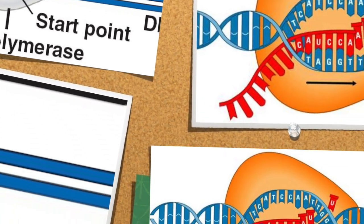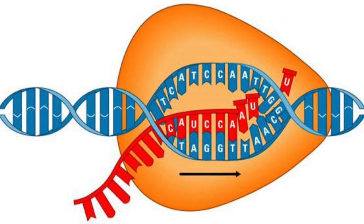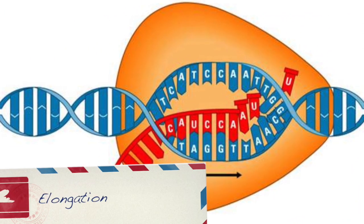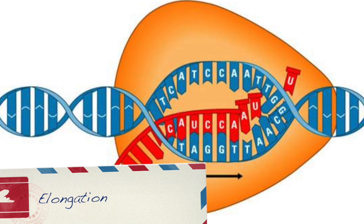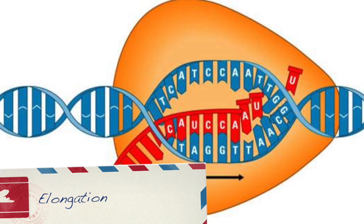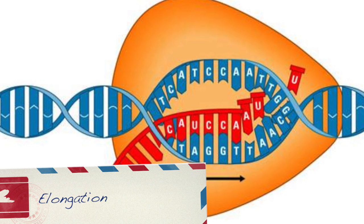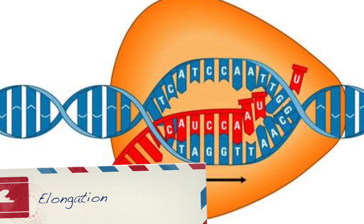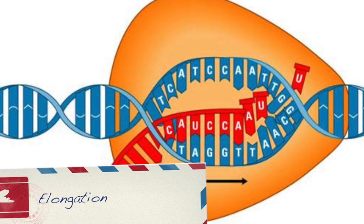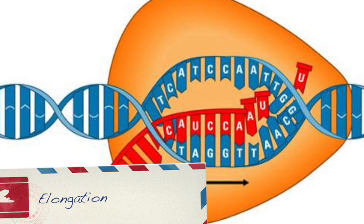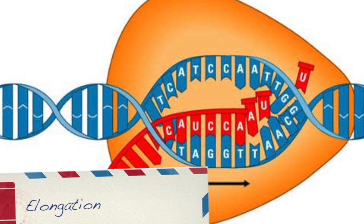The next step is elongation. This is where RNA polymerase makes a complementary RNA strand from the DNA antisense strand, or template strand.